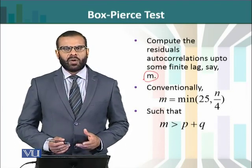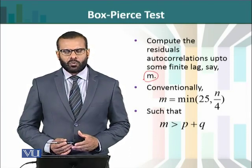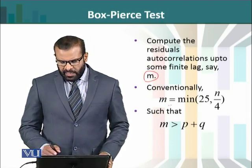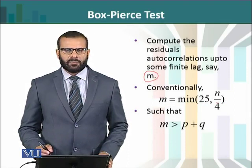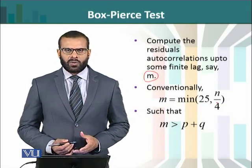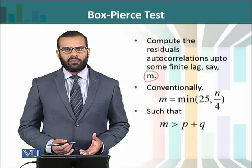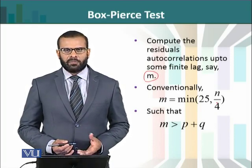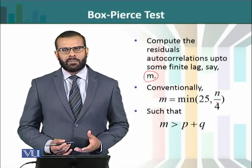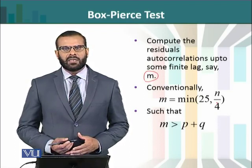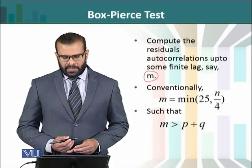m کی 24 تک debate کی جا سکتی ہے۔ جس میں عام طور پر recommended یہ ہے کہ m is minimum of 25 and 1/4th of the sample size۔ ان میں سے دونوں میں سے جو چھوٹا نمبر ہو — اگر 25 ایک چھوٹا نمبر ہے 1/4th of n سے تو 25 کو choose کر لیں گے، اور اگر 1/4th of n، 25 کے مقابلے میں چھوٹا نمبر ہے تو پھر whatever that integer near to n over 4 اس کو ہم as a m choose کر لیتے ہیں۔